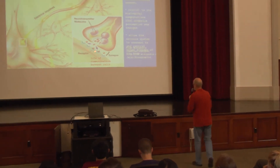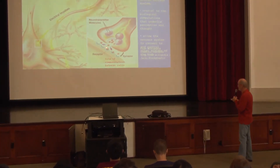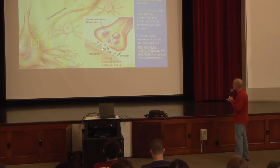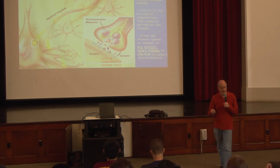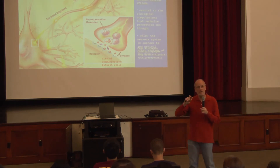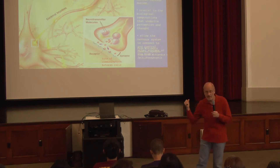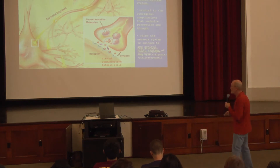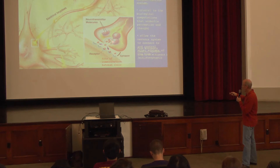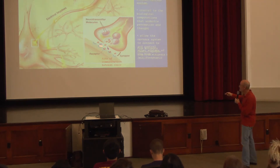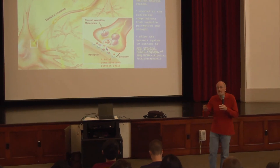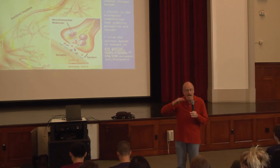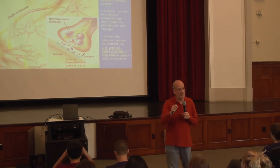Those neurotransmitters are released into a very tiny little space and diffuse across, then bind to receptor molecules. One of the things these receptor molecules can do is change the flow of ions — potassium channels, sodium channels, and other possibilities. One of the means of communication is secretion of this chemical and then a change in the target membrane to cause or prevent the movement of ions — somehow changing the membrane potential of the target cell.